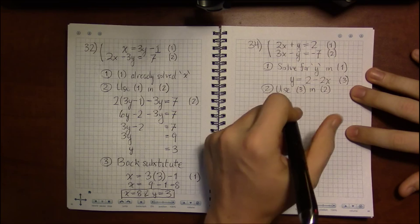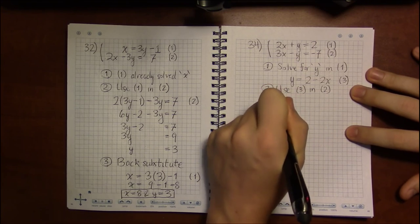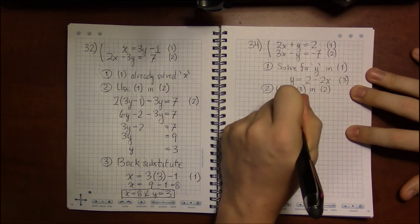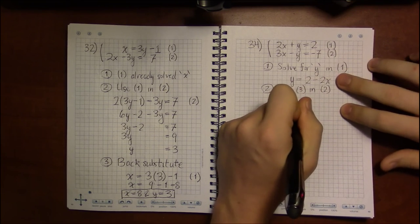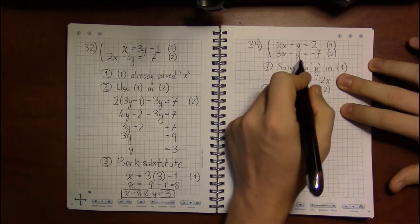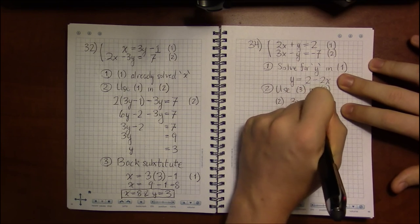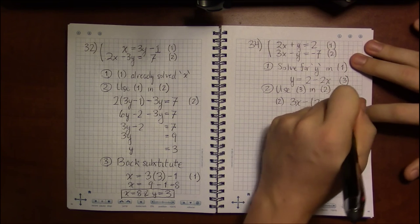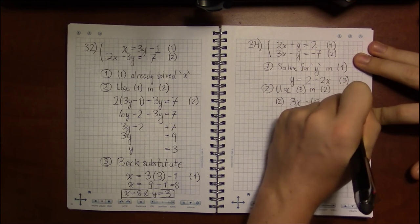So we'll use this by saying that instead of writing equation 2 down as it is here, we'll use this new information about y, that y is in fact 2 minus 2x, to rewrite equation 2 in a slightly new way.